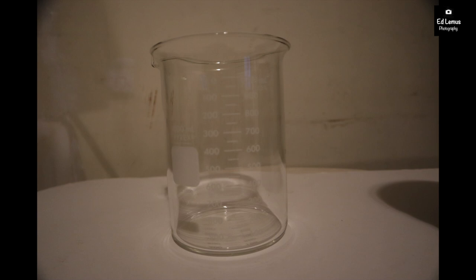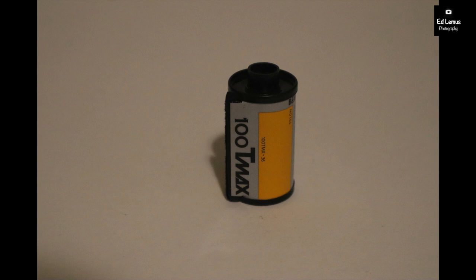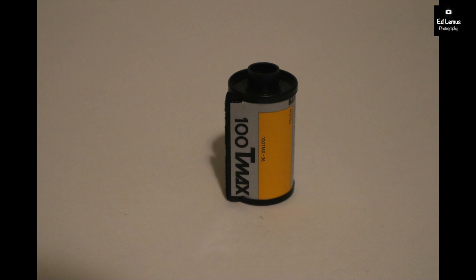Another item that might help is a 1 liter beaker, which can be purchased online. This is the most important item: ISO 100 black and white film, in this case 35mm.